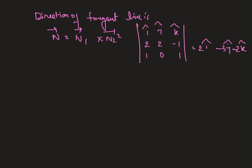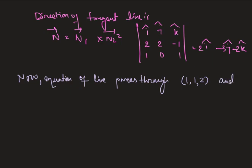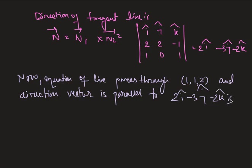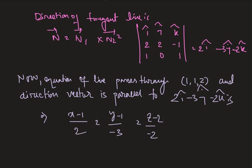Now equation of line passes through 1, 1, 2. Equation of line passes through the point 1, 1, 2 and direction vector is parallel to 2i cap minus 3j cap minus 2k cap is x minus 1 divided by 2 equals y minus 1 divided by minus 3 and z minus 2 divided by minus 2.